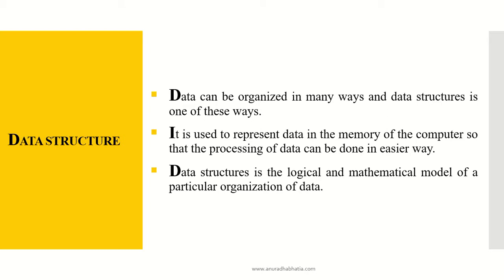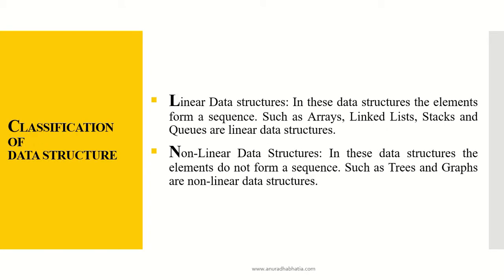Now, classification of data structures. Data can be classified in two ways: linear data structures and non-linear data structures. In linear data structures, the elements form a sequence — examples are arrays, linked lists, stacks, and queues. In non-linear data structures, the elements do not form a sequence; they use random memory allocation. Examples of non-linear data structures are trees and graphs.